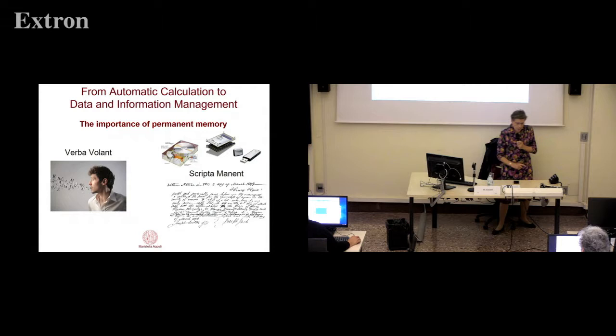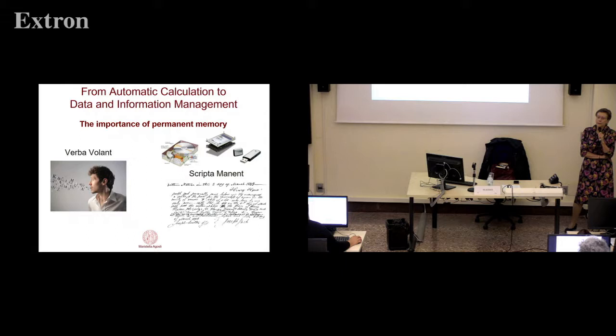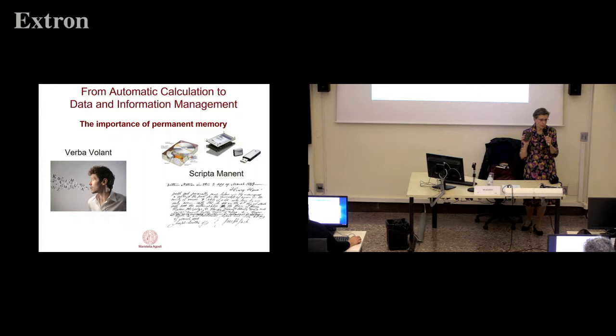One other milestone that permitted us to conceive library automation is permanent memory. Going back to the architecture of von Neumann, the architecture is exactly the same as the architecture of every modern computer we use today. In the computers — including smartphones — we have the CPU, the central memory, and communication with the outside.